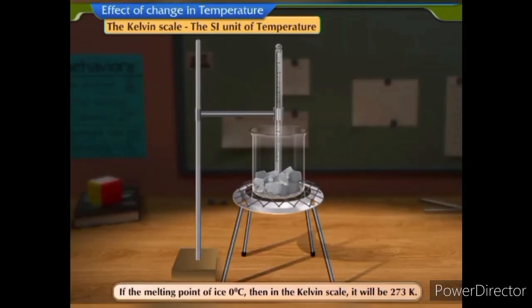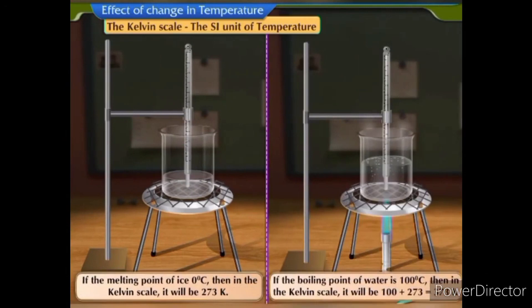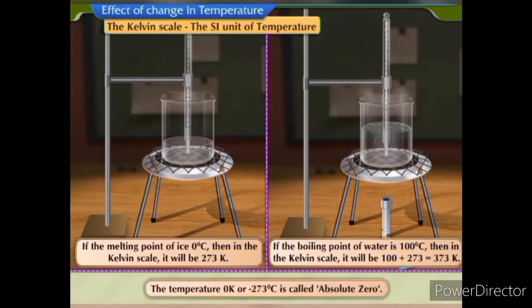Thus, if the melting point of ice is 0°C, then in the Kelvin scale it will be 273 K. Similarly, if the boiling point of water is 100°C, then in the Kelvin scale it will be 100 + 273 = 373 K. The temperature 0 K, or −273°C, is called absolute zero.